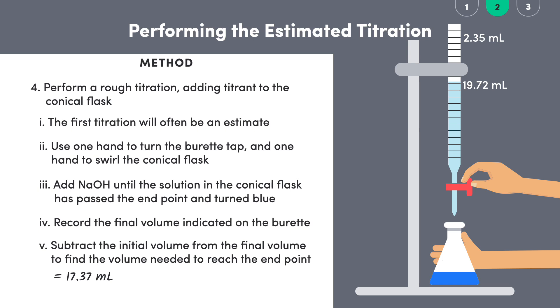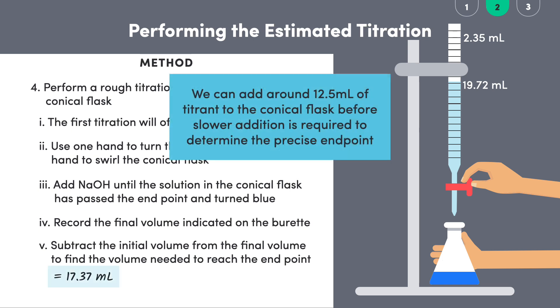But rough isn't good enough, since our key objective is to measure the precise volume of titrant required to reach the endpoint. So we just used this first result to say that we can confidently add around 12.5 milliliters of titrant to the conical flask before slower addition is required to determine the precise endpoint.